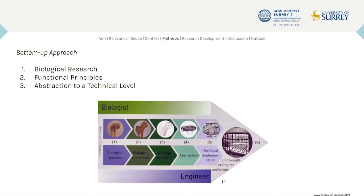In order to further explore how bending active plates can be shaped with tensile elements, we took a biomimetic approach inspired by the behaviors of the Australian curly-leaf spider. Our methodology follows a bottom-up process beginning with biological research, understanding the functional morphological principles, and then abstracting these principles to a technical level applicable on an architectural scale.